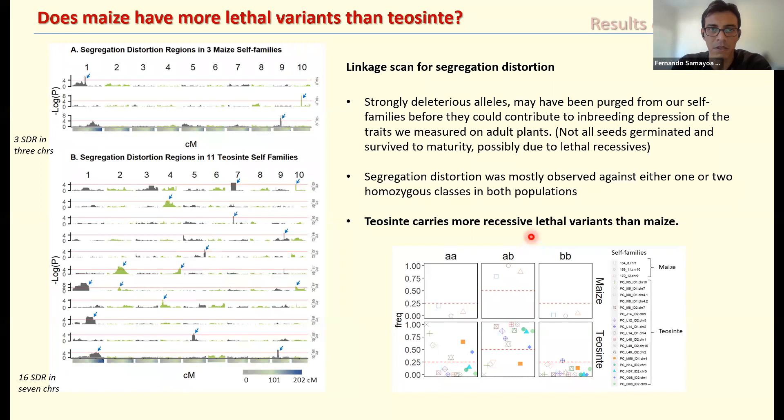Coming back to the question of whether there are more lethal variants in maize than teosinte — again the result is surprising: we found more lethal variants in teosinte than in maize.